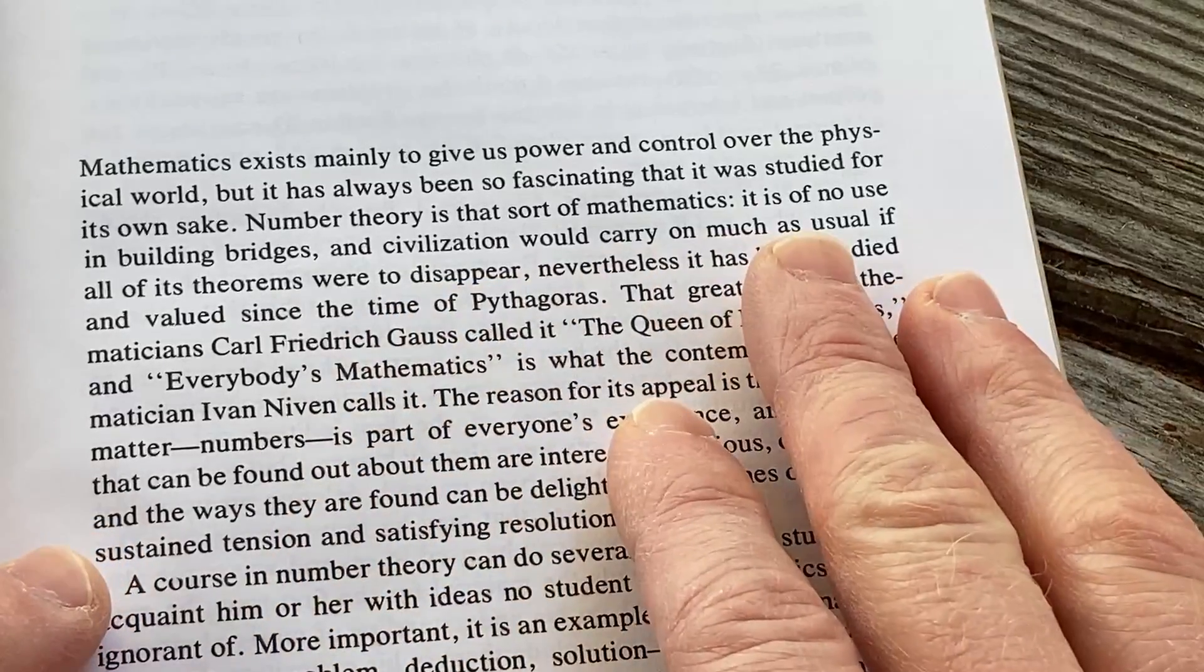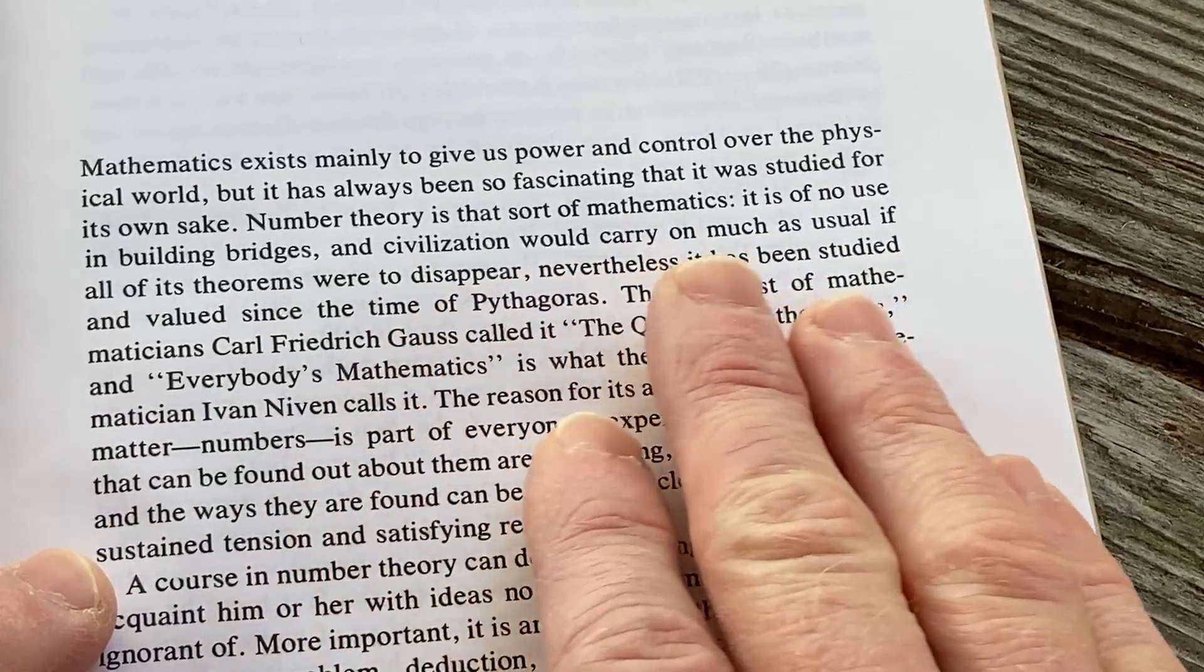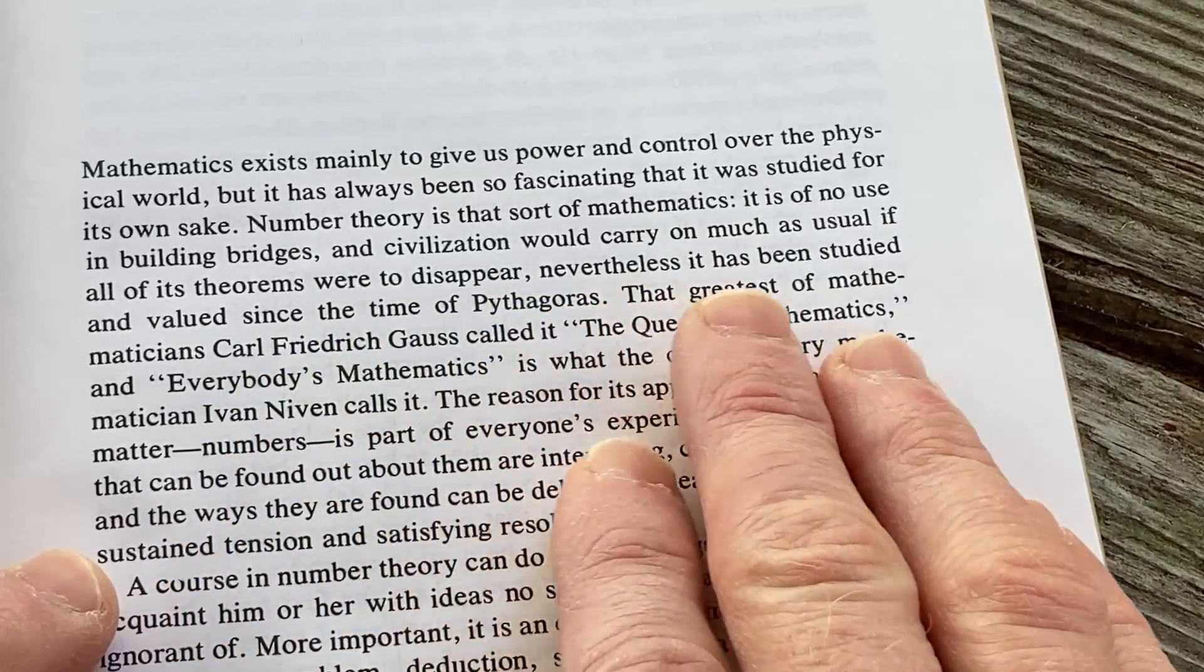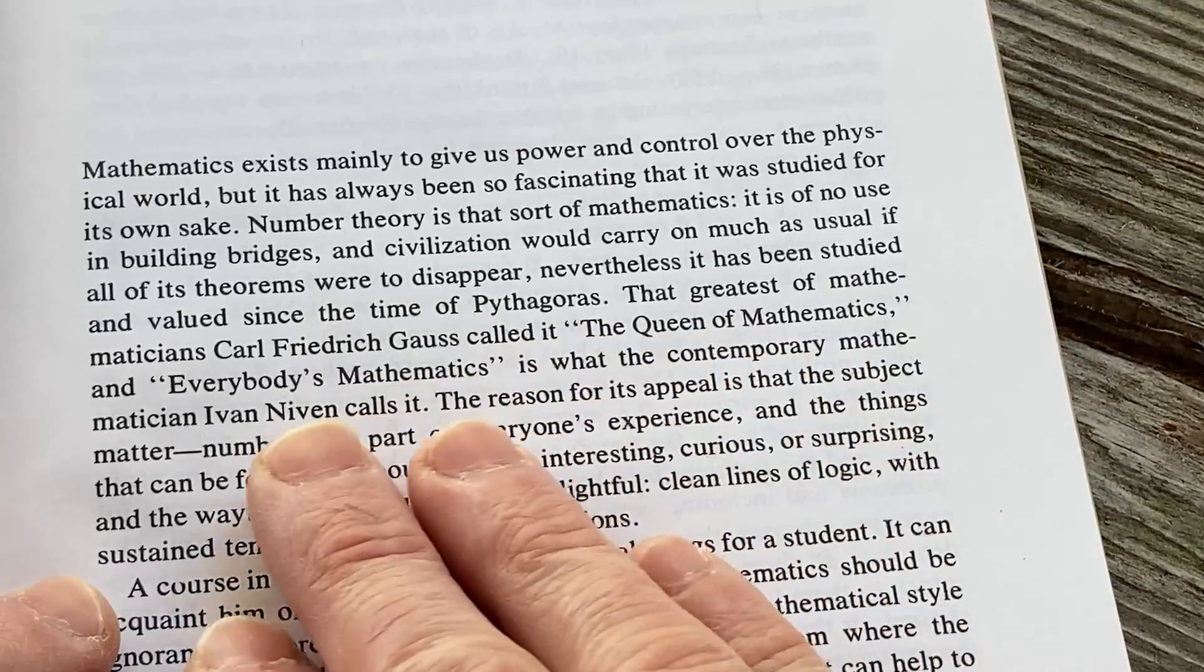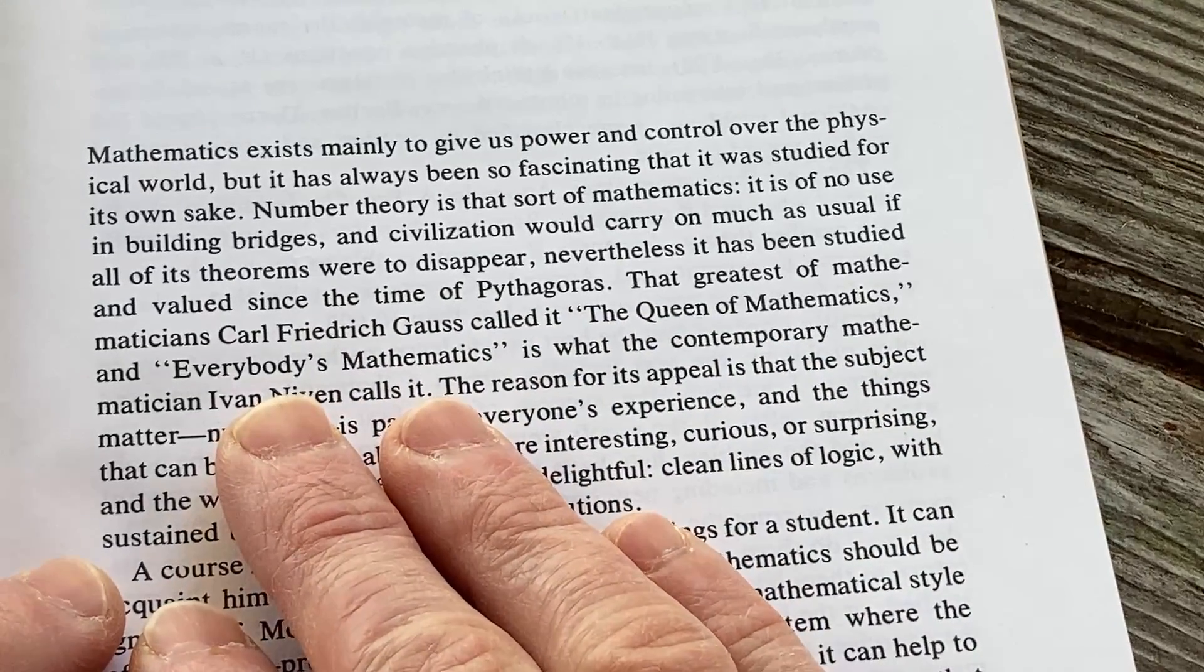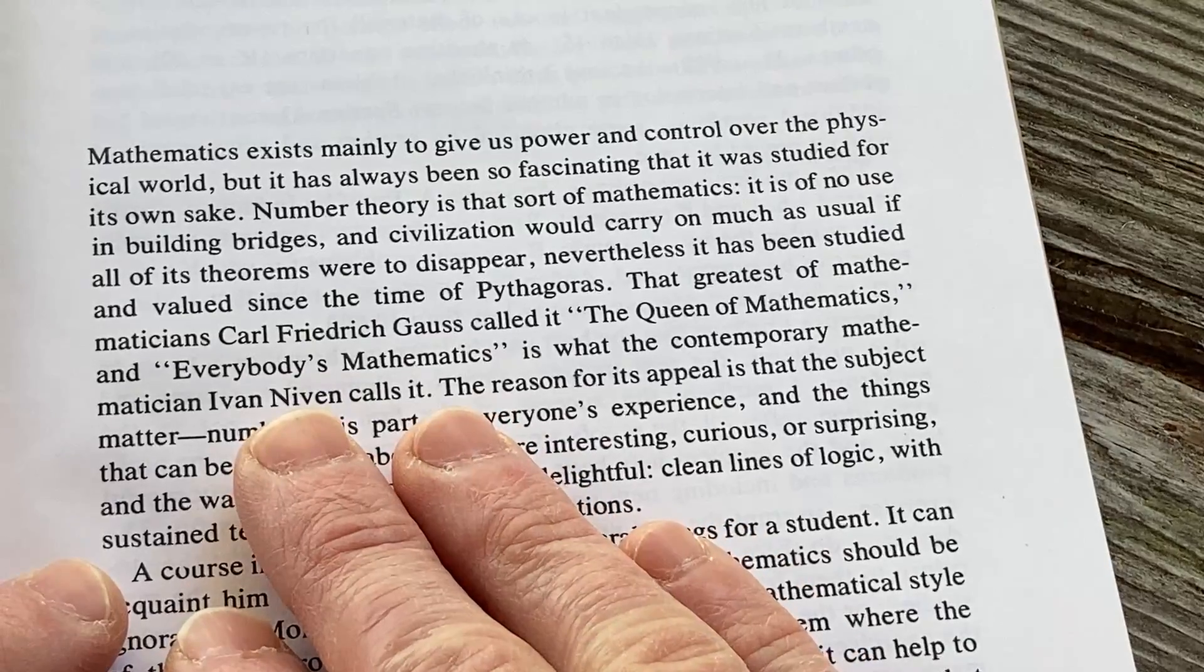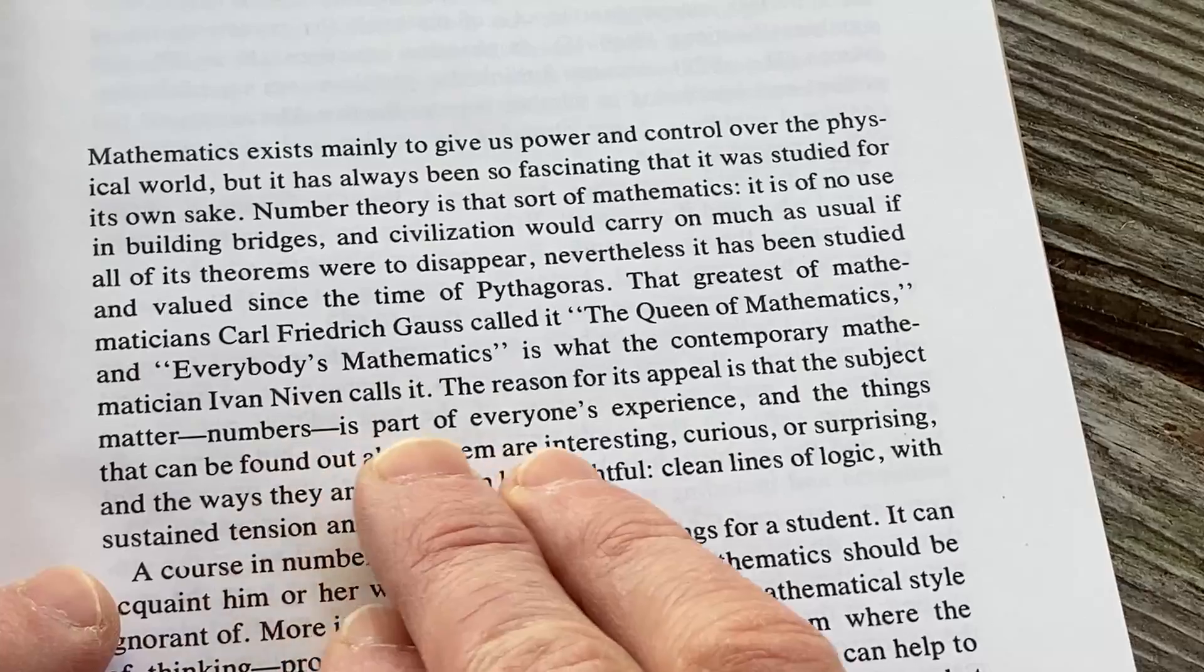I took a pure track as an undergrad, so I took a lot of pure mathematics courses. Number theory is that sort of mathematics. It is of no use in building bridges, and civilization would carry on much as usual if all of its theorems were to disappear. Nevertheless, it has been studied and valued since the time of Pythagoras. The greatest of mathematicians, Carl Friedrich Gauss, called it the queen of mathematics.